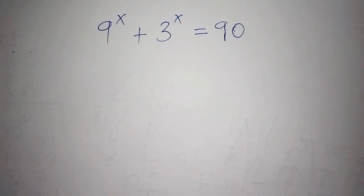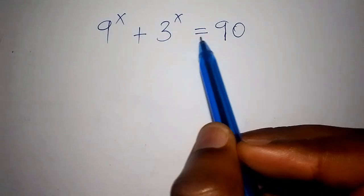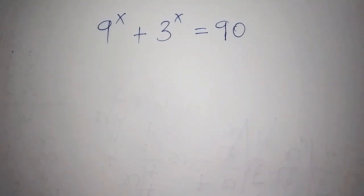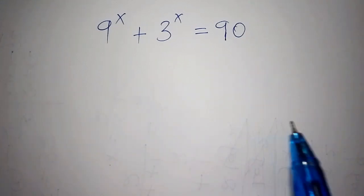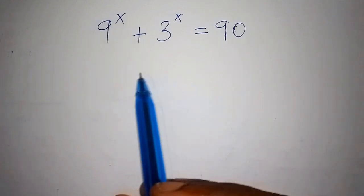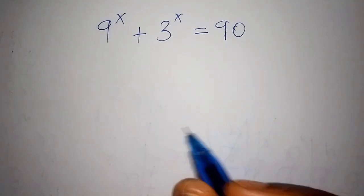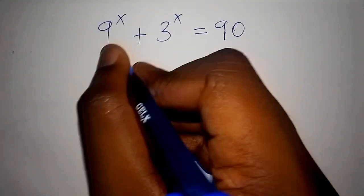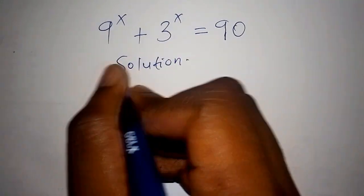Hello viewers, welcome to today's math lesson. We want to solve a very interesting math problem: we have 9 to the power of x plus 3 to the power of x equals 90, and we are asked to find the value of x. Let's stay tuned and watch the video to the end as we try to solve this problem in the shortest time possible.